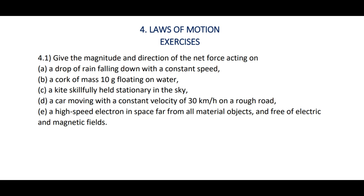Hello students. In this video we are going to discuss 4.1 and 4.2 from Laws of Motion. We need to find the magnitude and direction of the net force acting on: a drop of rain falling down with constant speed, a cork of mass 10g floating on water, a kite skillfully held stationary in the sky, a car moving with constant velocity of 30 km per hour on a rough road, and a high speed electron in space far from all material objects and free of electric and magnetic fields.